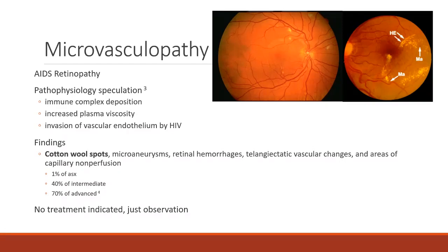Microvasculopathy is one of the direct effects of HIV infection. It is also known as AIDS retinopathy, and its pathophysiology involves either immune complex deposition, increased plasma viscosity, or invasion of vascular endothelium by HIV — basically, it is still under investigation. What is known is that its prevalence is inversely proportional to CD4 count. The most common and earliest sign of HIV infection would be cotton wool spots, seen in the image on the left. Cotton wool spots represent infarction of the nerve fiber layer of the retina, and can be seen in other diseases such as diabetes mellitus and systemic hypertension.